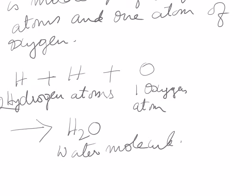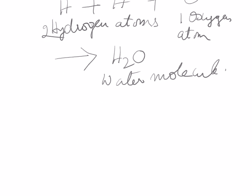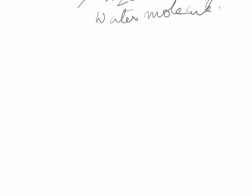First, particles of matter have space between them, which is called intermolecular space. Second, particles of matter are always in random motion, and this motion is known as Brownian motion. Third, the particles of matter have a force of attraction between them, which is called intermolecular force of attraction. I will explain all three points again even if you have forgotten, so don't worry.